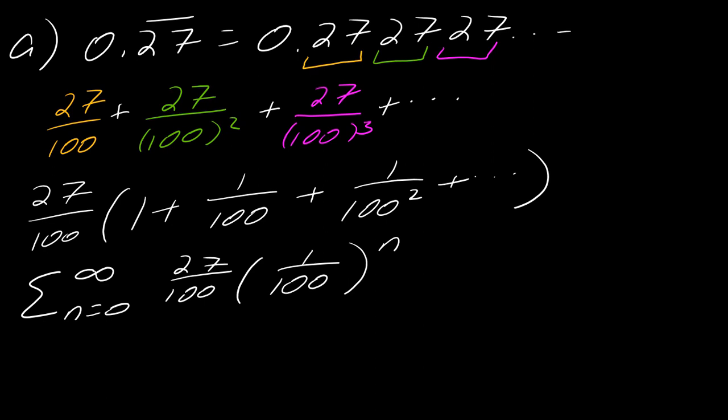And now is this going to converge? Yes it is. 1 over 100 is a fraction less than 1, so I can use my convergence formula now. I've got my constant 27 over 100 over 1 minus 1 over 100. So there's how you plug that in.